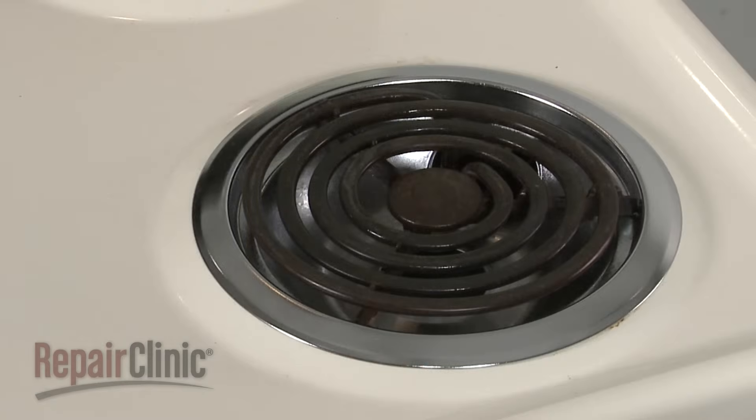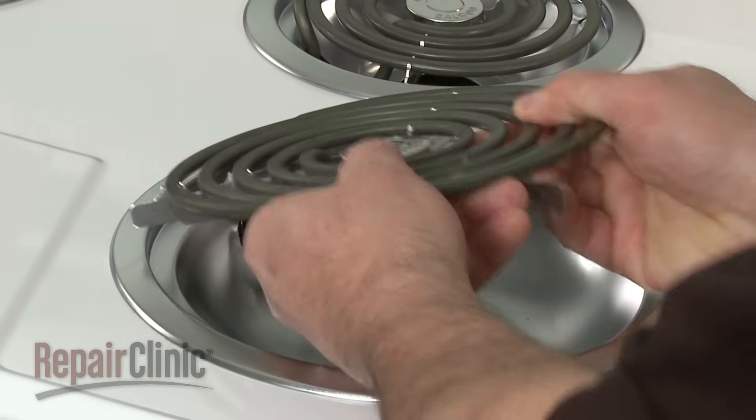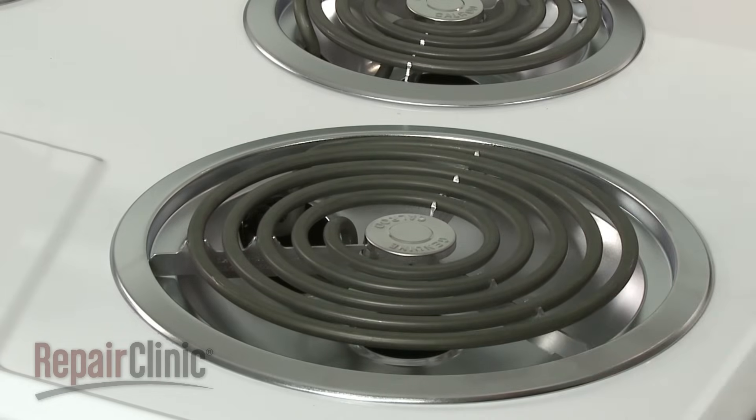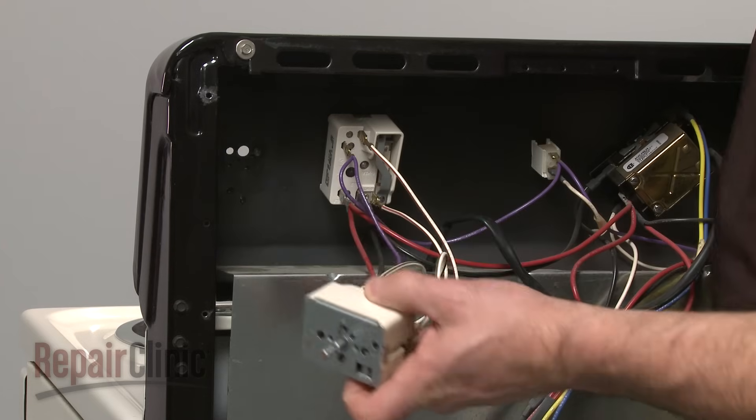A defective switch may prevent the element from working at all. If your cooktop has another identically sized surface element, try substituting it in the receptacle. If the newly installed element fails to work, then the switch is probably at fault.